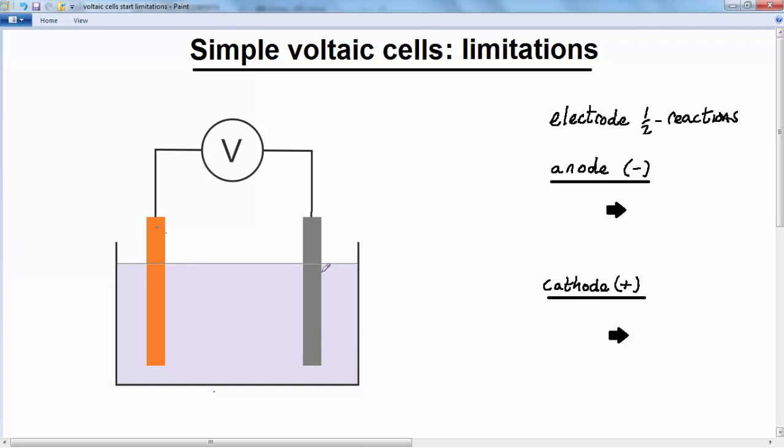Now we saw last lesson that a voltaic cell is made from two electrodes, different metals which are immersed in an electrolyte. So in this case we'll make the electrolyte dilute sulfuric acid and our negative anode will be made from zinc, while our positive cathode will be made from copper.